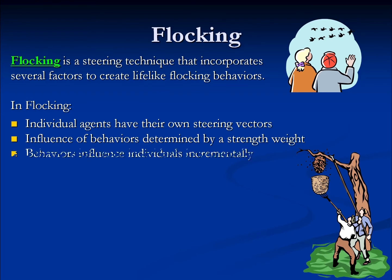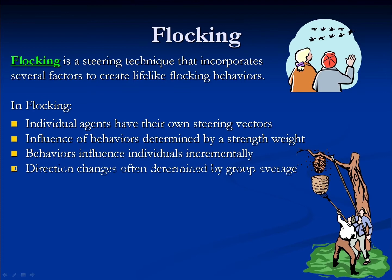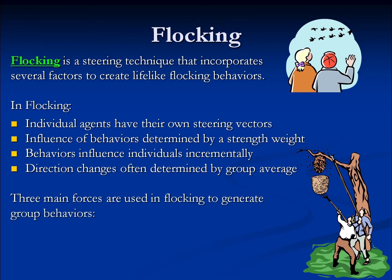We make adjustments to individual behaviors incrementally — we scale down a vector and apply it to the existing steering or forward vector. Some computations are done for the group and then applied to each individual, particularly those dealing with agent direction and position. There are three main forces or influences used in flocking to generate group behaviors: alignment drives agents to move in the same direction, cohesion drives agents to be close to one another, and separation attempts to prevent collisions between agents. In flocking, the agents are often referred to as boids.